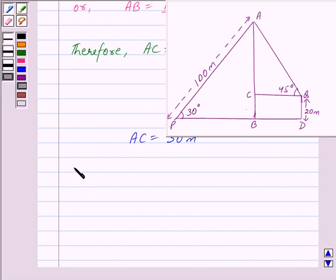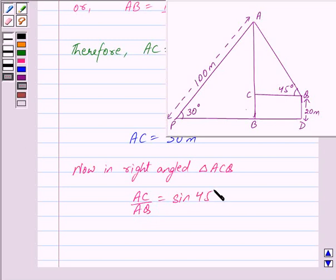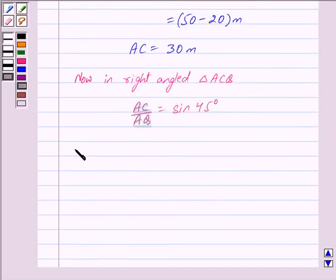Now in right-angled triangle ACQ, we have perpendicular upon hypotenuse is equal to sin theta. That is we have AC upon AQ is equal to sin 45 degrees. Or we have 30 upon AQ is equal to sin 45 degrees which is equal to 1 upon root 2.